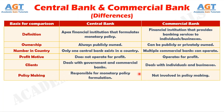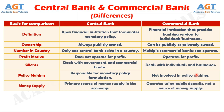Number six: a central bank is responsible for creating monetary policies and regulating interest rates, whereas commercial banks do not create any such policies. Number seven: the central bank is the source of money supply in the economy, whereas commercial banks rely on customer deposits and do not control money creation.